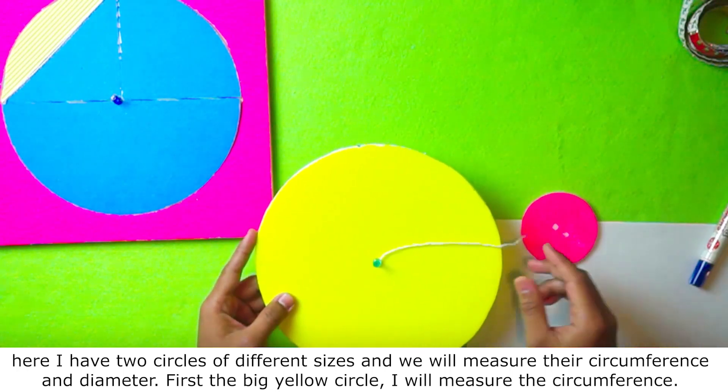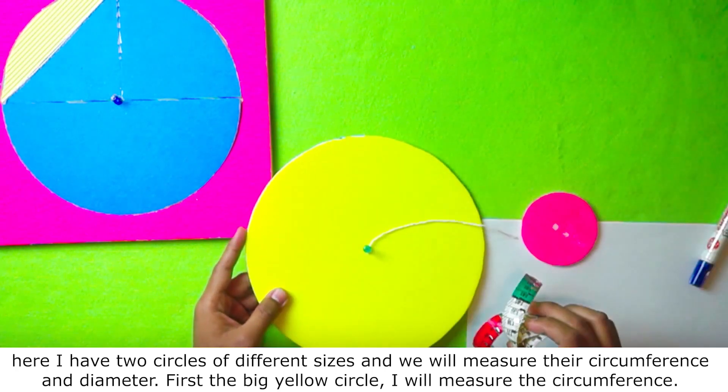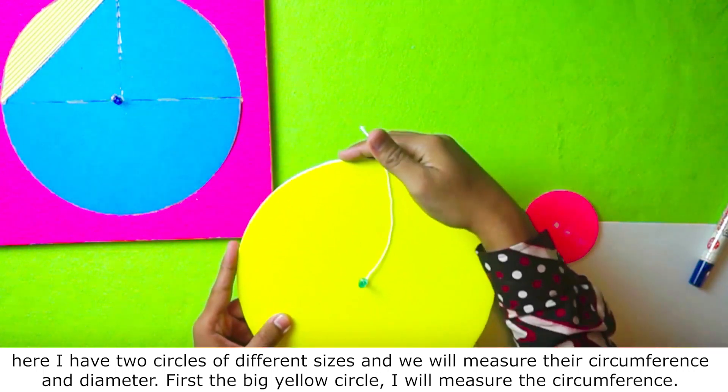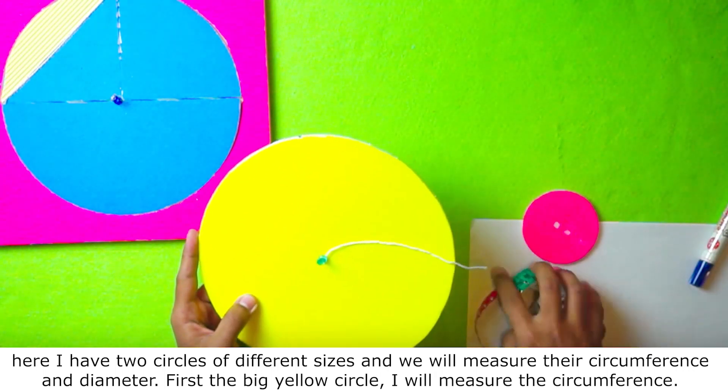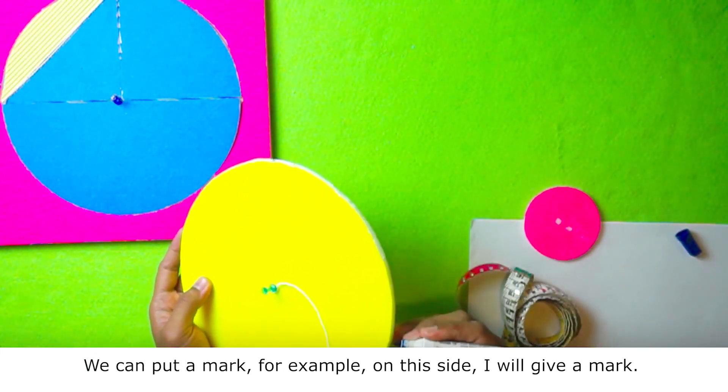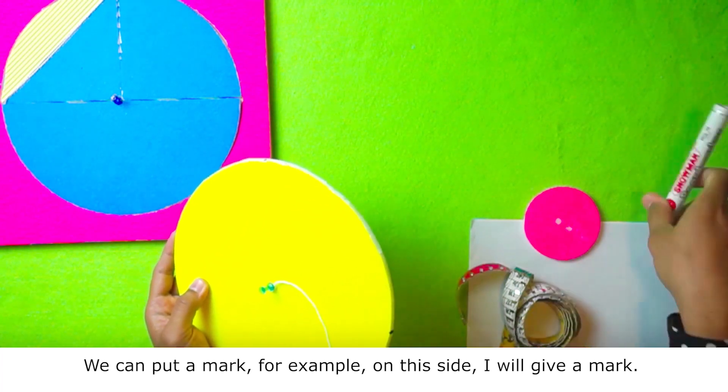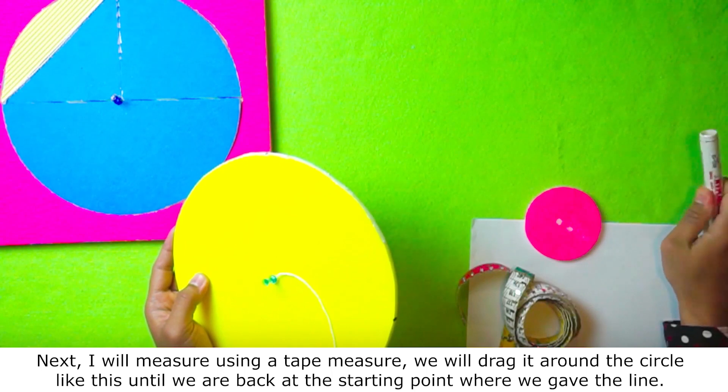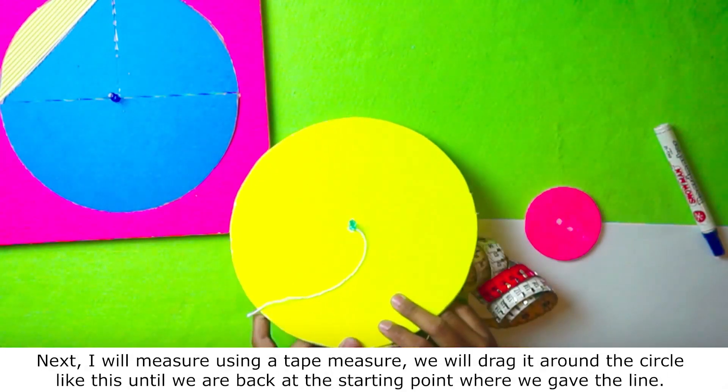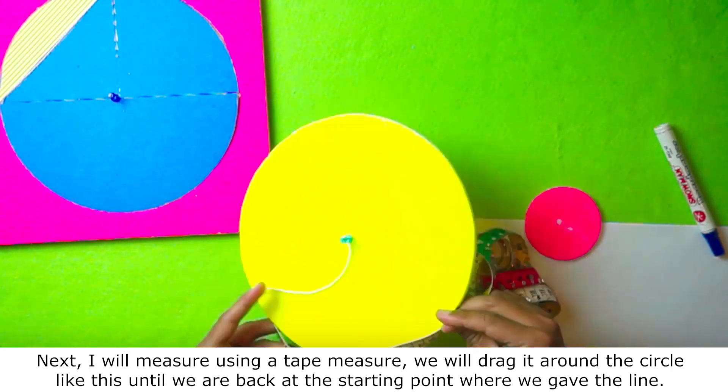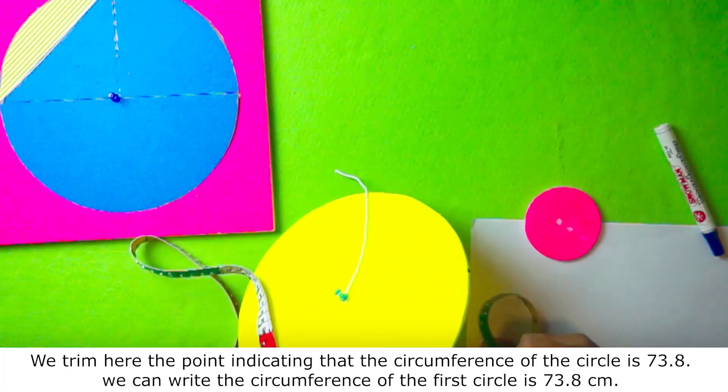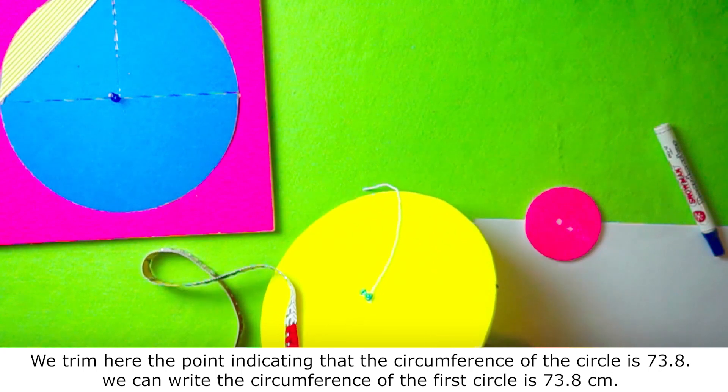We can put a mark, for example, on this side I will give a mark. Next, I will measure using a tape measure. We will drag it around the circle like this until we are back at the starting point where we gave the line. We trim here the point indicating that the circumference of the circle is 73.8.